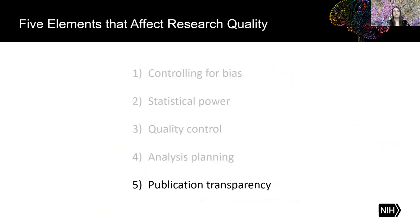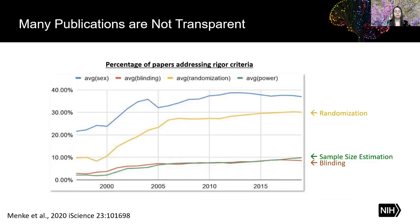Now let's look at the last of our five elements: publication transparency. One major facet of transparency is reporting important study elements related to rigor, like blinding, randomization, and sample size estimation. However, few studies actually report these items. A study used a text mining algorithm to measure reporting in over 1.5 million papers from PubMed. Despite some gains over the last 20 years, reporting is still very low — randomization tops out at about 30%, and sample size estimation and blinding are around 10%. We still have a long way to go.